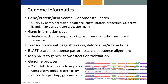The genome informatics capabilities of Pathway Tools include the abilities to search for genes, proteins, and RNAs, as well as to search for genome sites. These searches can let the user search by many different criteria. There's also a gene information page where the user can retrieve the nucleotide sequence of a gene or genomic region or the amino acid sequence of the product. There's a transcription unit page that shows regulatory sites and regulatory interactions. There's also a BLAST search, a sequence pattern search, and a sequence alignment capability.